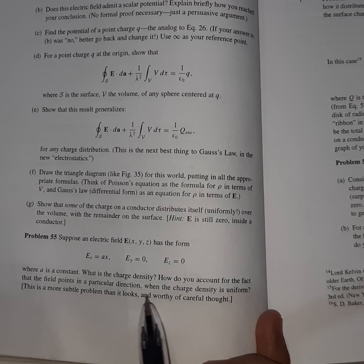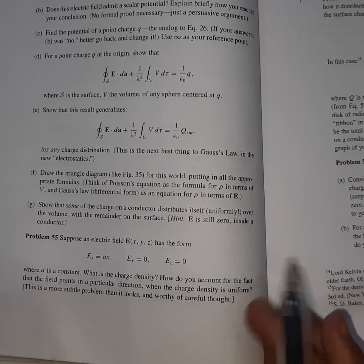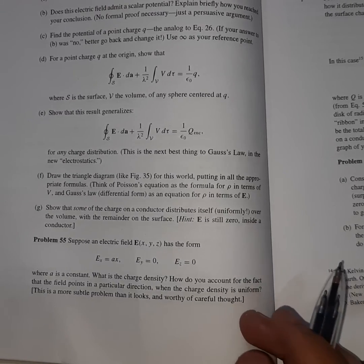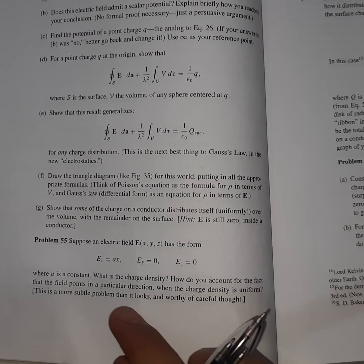So he's saying, how do you account for the fact that the field points in a particular direction when charge density is uniform?